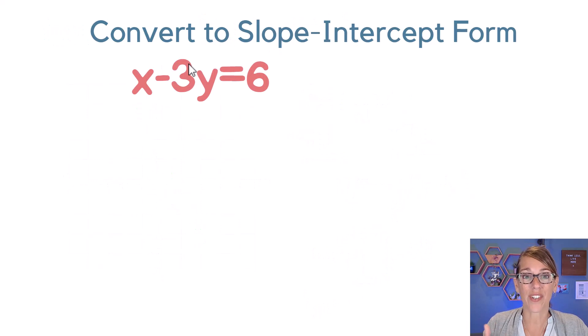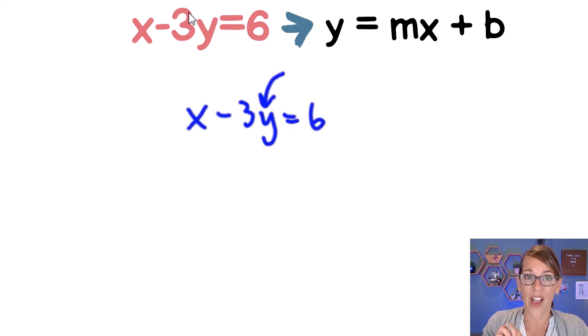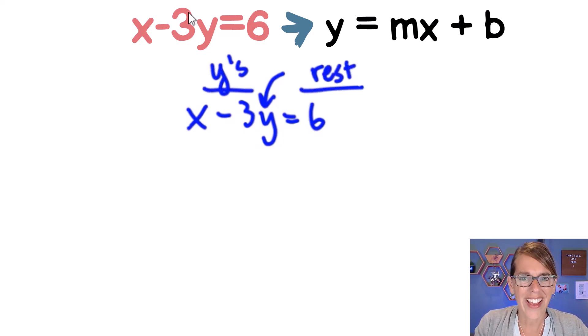In this next one I want to convert to slope-intercept form. We're not asked to graph this. I know that I want y equals mx plus b and I have x minus 3y equals 6. I'm going to keep my eye on that y. I want y's on one side and everything else on the other side. So that x needs to move.